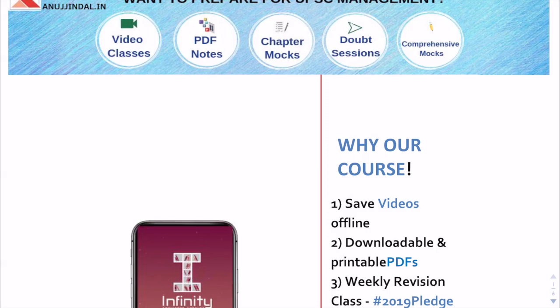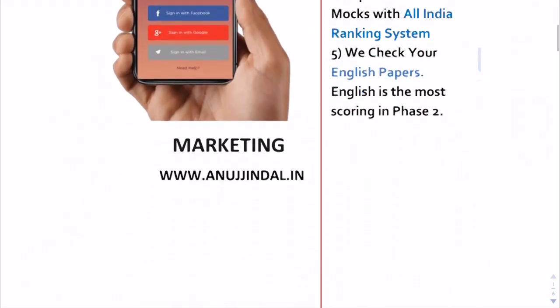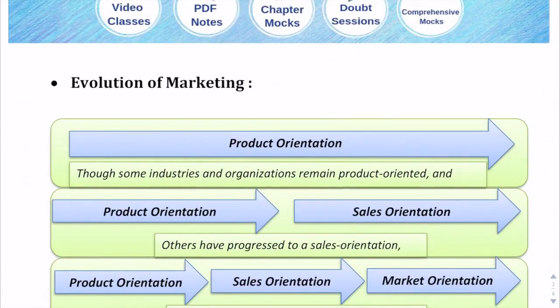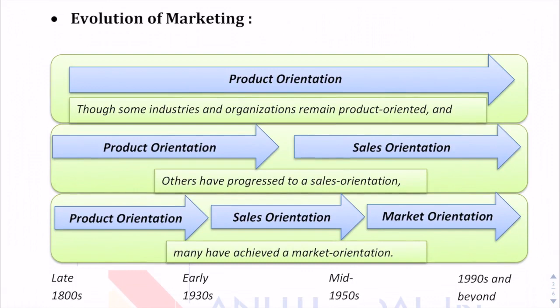Let's start with marketing. We are going to study the evolution of marketing. Before studying evolution of marketing, we should understand the meaning of evolution. Evolution means the journey or change of a concept from different time periods — how the concept has changed, how people's views and perceptions regarding that concept have changed. How a concept has come into its current state or form, changing across different time periods.